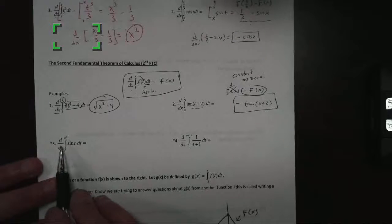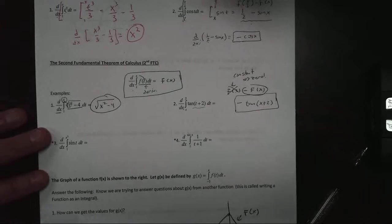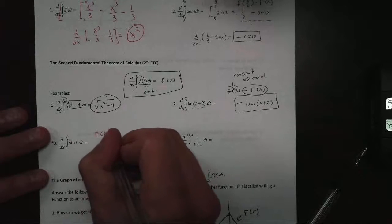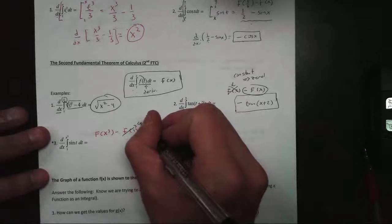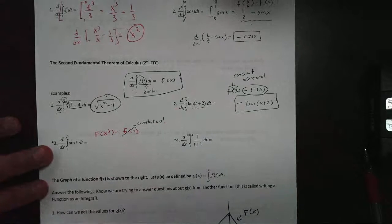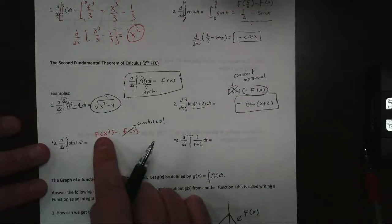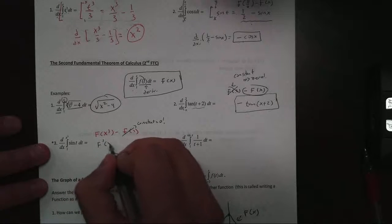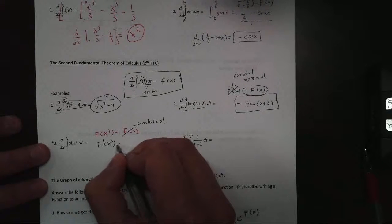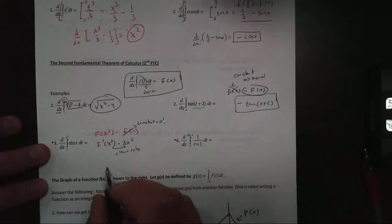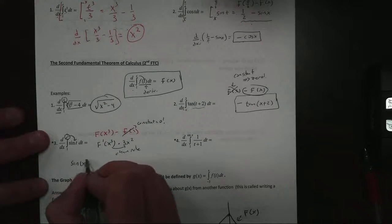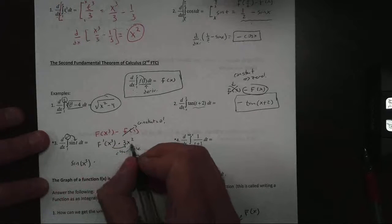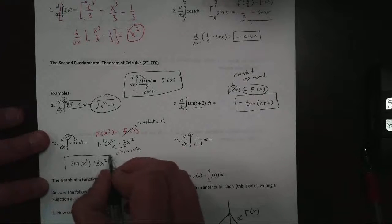The really hard ones are number 3 and 4. For number 3, if we set up the fundamental theorem, we know this is going to become f of x cubed minus f of 1. The f of 1 is a constant — when I take the derivative, it becomes 0, so I don't worry about that. It's f of x cubed. The problem is when I take its derivative, I get f prime of x cubed, but I'm also going to get 3x squared — there's a chain rule. So this becomes sine of x cubed, multiplied by its derivative, 3x squared. That's the chain rule, and there's our answer.